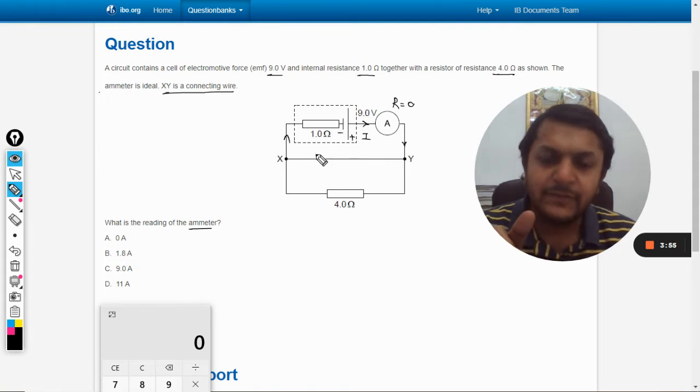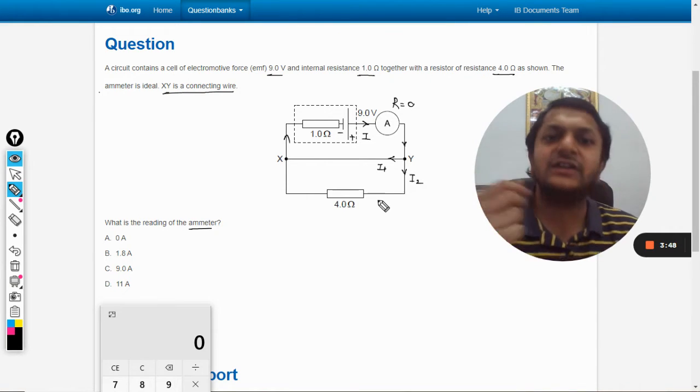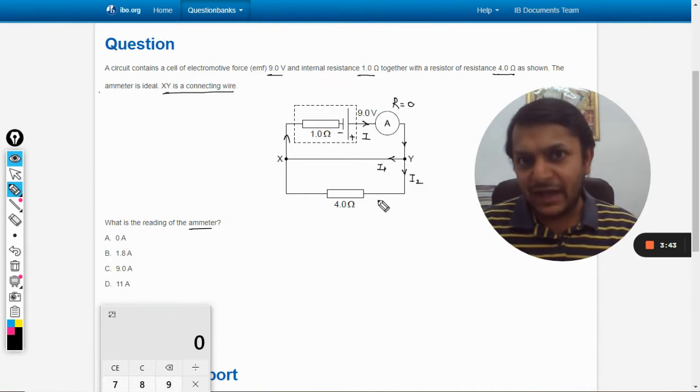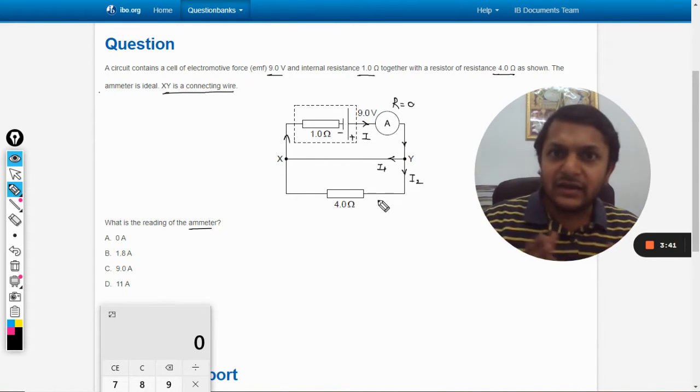Here and here, this can be taken as i1, this current is taken as i2. Now so there are two branches which are definitely in parallel connection.